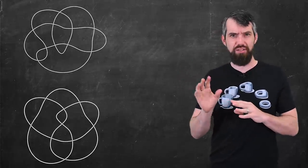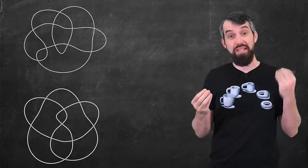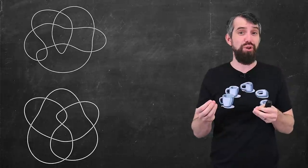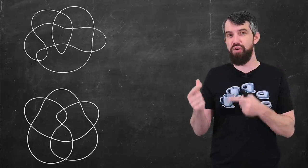Consider for example these two knots. The top one is ten crossings, the bottom has nine. But that's not necessarily a problem, because as we know, the Reidemeister moves can change the number of crossings.